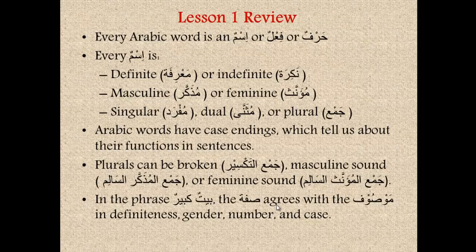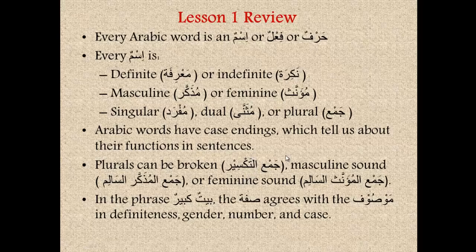That brings us to the end of lesson number one. Here is a quick review: every Arabic word is either an ism (a noun or pronoun), a fi'l (a verb), or a harf (a particle). Every ism is either definite (ma'rifah) or indefinite (nakirah). Every ism is also either mudhakar (masculine) or mu'annath (feminine). Every ism is numbered — it can be singular (mufrad), dual (muthanna), or plural (jam'a). Arabic words have case endings, and these tell us something about their functions in sentences. Plurals fall under one of three categories: jam'a al-takseer (broken), jam'a al-mudhakar al-salim (sound masculine), or jam'a al-mu'annath al-salim (sound feminine). And lastly, in the phrase baytun kabirun, the adjective kabirun is al-sifa.